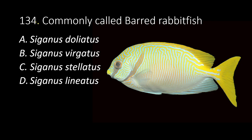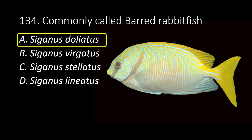134. Commonly called barred rabbit fish. A. Siganus doliatus. B. Siganus virgatus. C. Siganus stellatus. D. Siganus lineatus. The answer is A, Siganus doliatus.